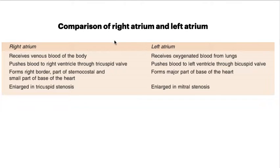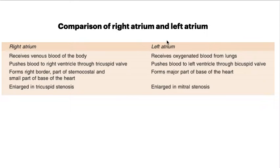Comparing the right and left atrium: the right atrium receives venous blood of the body, while the left atrium receives oxygenated blood from the lungs. The right atrium pushes blood to the right ventricle via the tricuspid valve, whereas the left atrium pushes blood to the left ventricle via the bicuspid valve. The right atrium forms the right border and a smaller part of the base of the heart, whereas the left atrium forms the major part of the base. The right atrium enlarges in tricuspid stenosis and the left atrium enlarges in mitral stenosis.